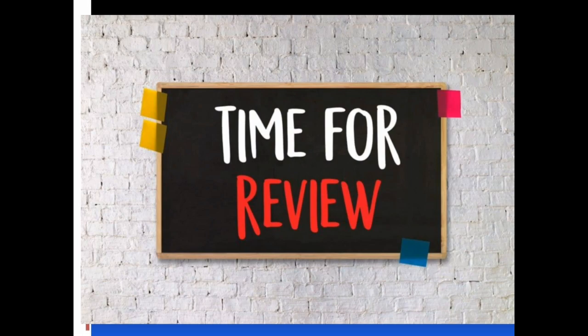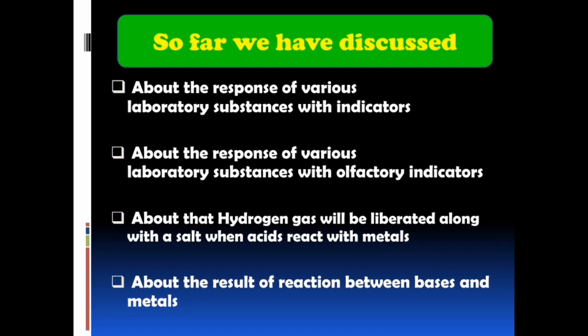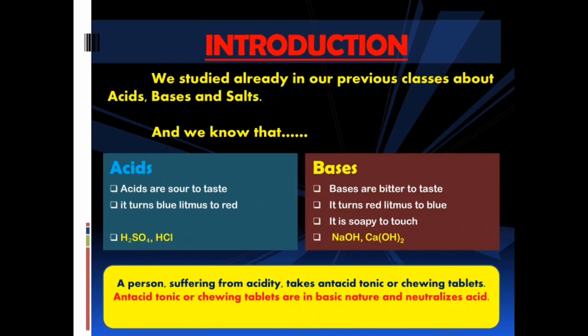It's time for review. So far we have discussed about the response of various laboratory substances with indicators, about the response of various laboratory substances with olfactory indicators, about that hydrogen gas will be liberated along with a salt when acids react with metals, and about the result of the reaction between bases and metals.